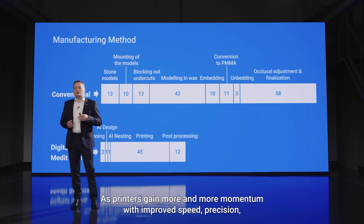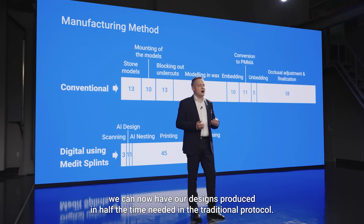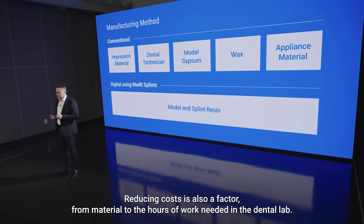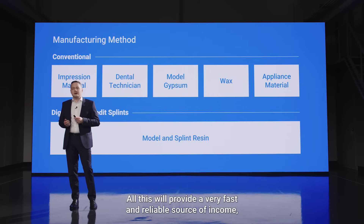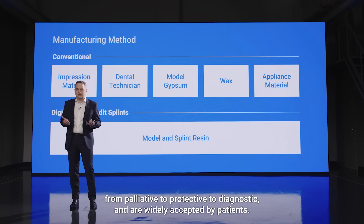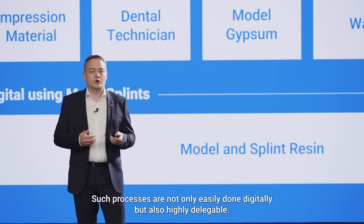As printers gained more and more momentum with improved speed, precision and a slew of compatible materials at our disposal, we can now have our designs produced in half the time needed in the traditional protocol — and this is without factoring in the time needed for the analog impression to actually reach the lab. Reducing costs is also a factor, from material to the hours of work needed in the dental lab. All this will provide a very fast and reliable source of income, since splints see an ever-increasing number of designs and uses, from palliative to protective to diagnostic, and are widely accepted by patients.